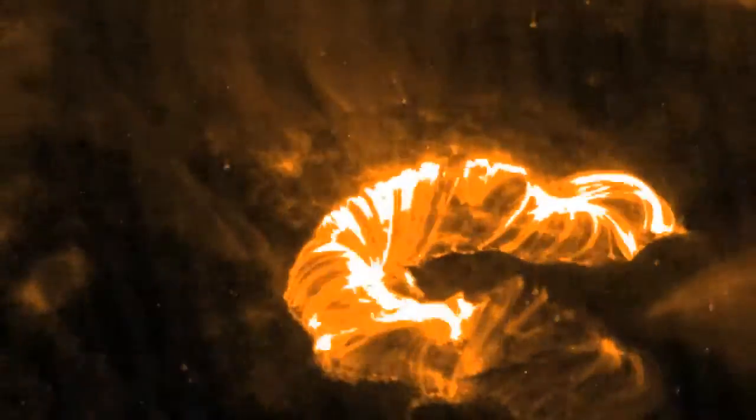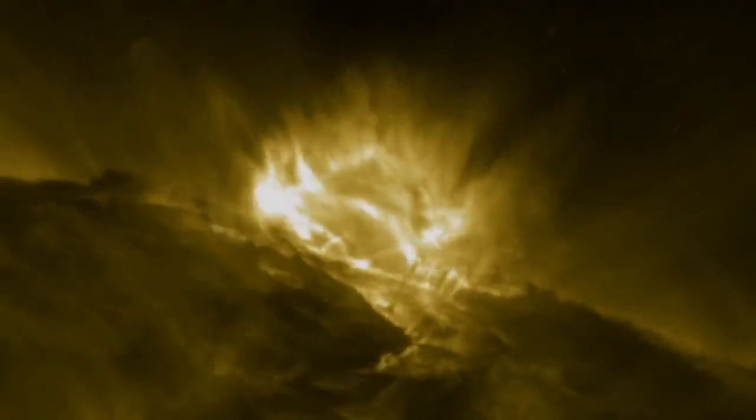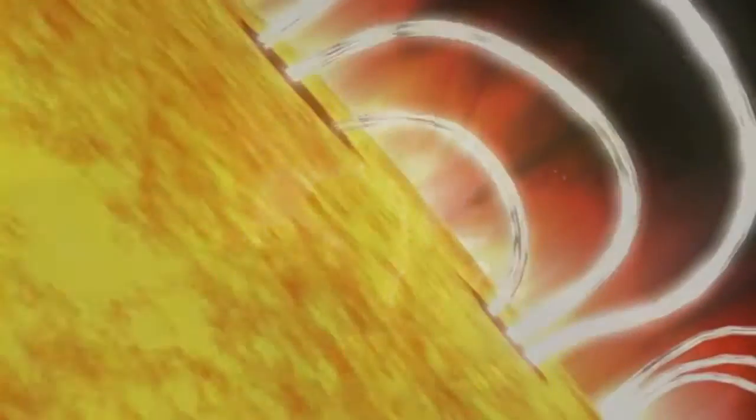So what are these solar eruptions? A solar flare is basically an explosion on the surface of the Sun, ranging from minutes to hours in length. Large flares can release enough energy to power the entire United States for a million years.